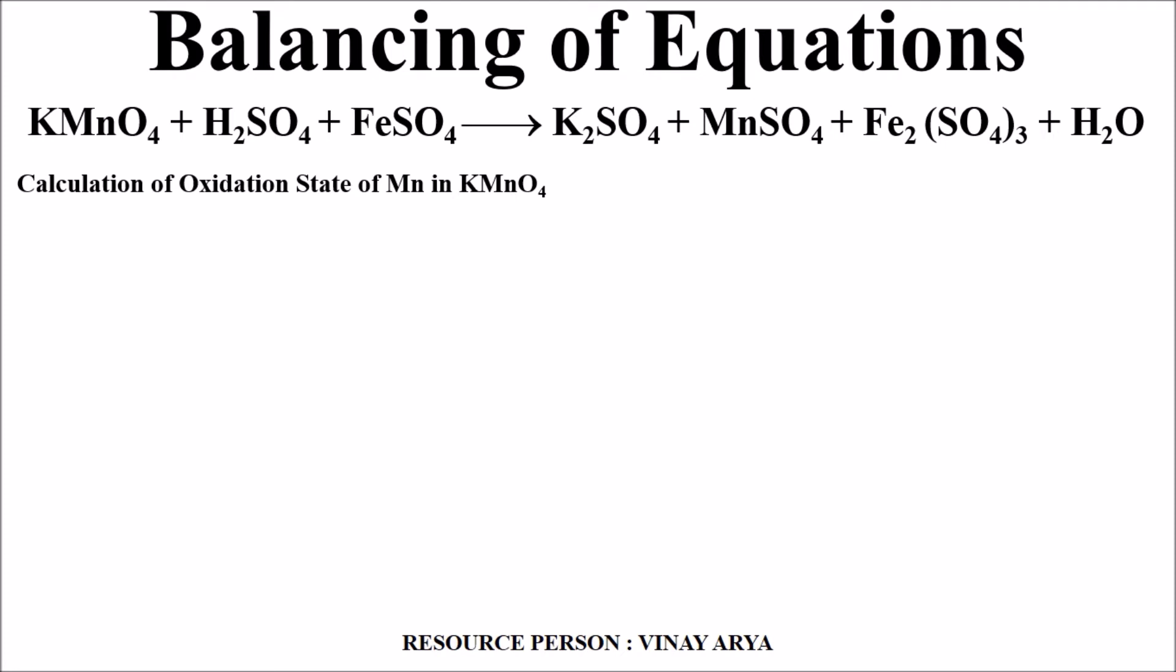So for the segregation of oxidation part of the reaction, we are considering KMnO4 and we are calculating the oxidation state of Mn. As we know that potassium has a fixed oxidation state that is of +1.